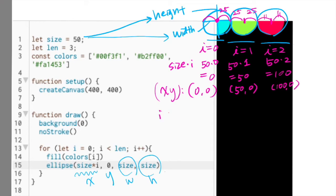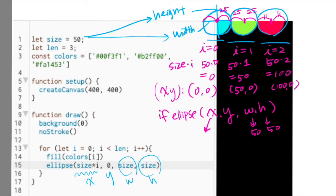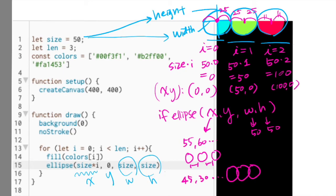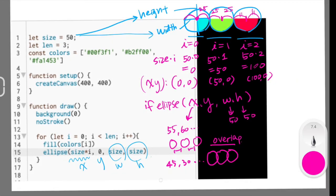If we make the x-coordinate multiplier something bigger than the diameter of the circle — let's say we keep width and height as 50, but change the x-coordinate multiplier to 55 or 60 — the circles would have some gap between one another. If we make it 45 or 30, something less than the diameter, they would be overlapped. So this is how we can create three circles with three colors in p5.js.